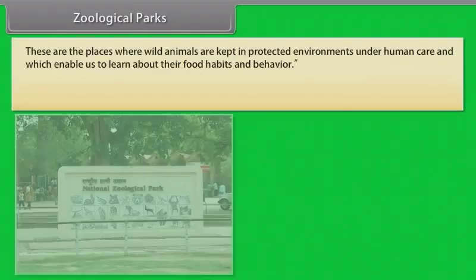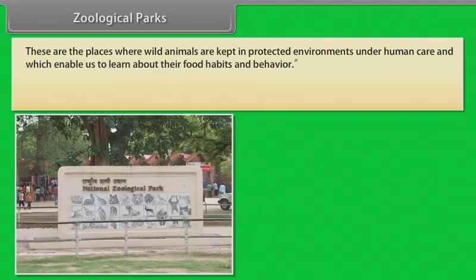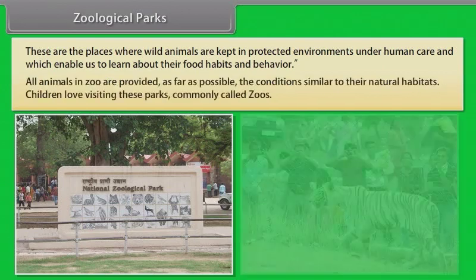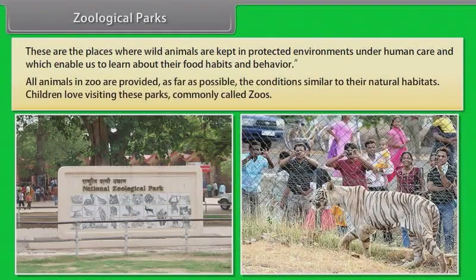Zoological parks are places where wild animals are kept in protected environments under human care, enabling us to learn about their food habits and behaviour. All animals in a zoo are provided, as far as possible, conditions similar to their natural habitats. Children love visiting these parks, commonly called zoos.